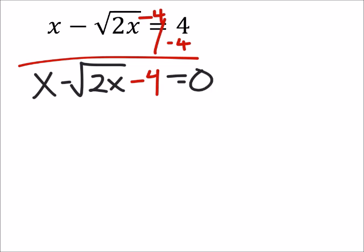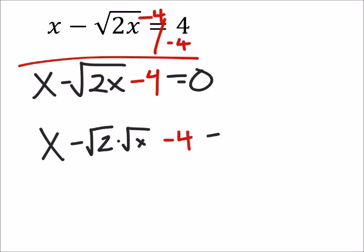Let's break up that middle term just so we can see the difference between these two. We've got x minus the square root of 2 times the square root of x, and of course that's minus 4. This should equal 0. But really, I just want to see the exponent of the square root of x, so I'm going to make this x to the power of 1/2.